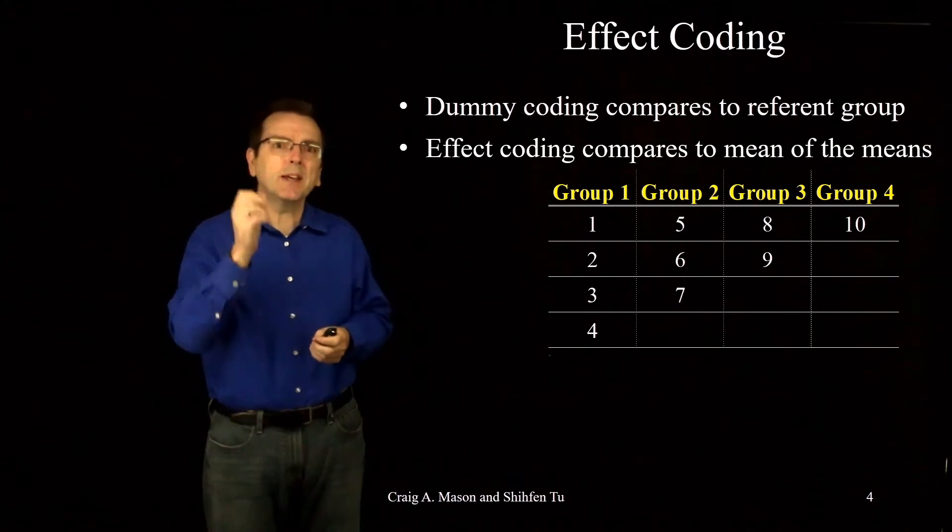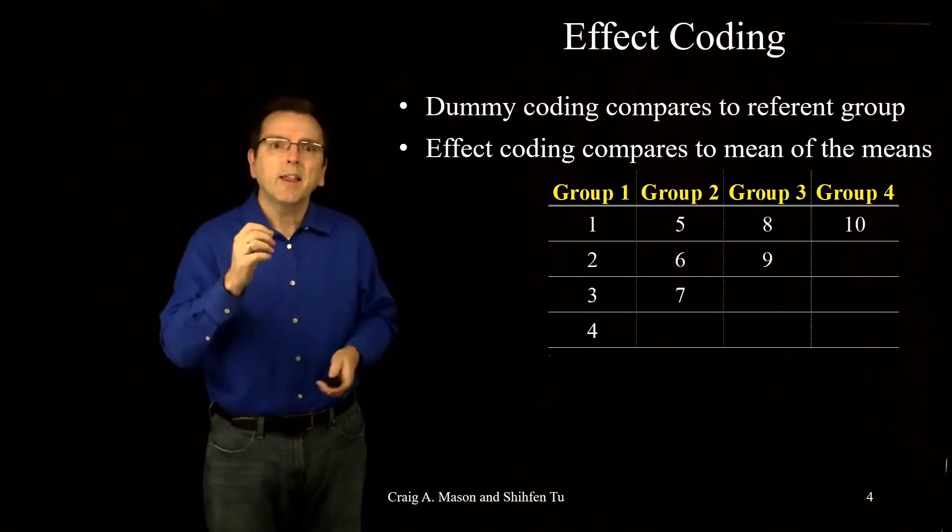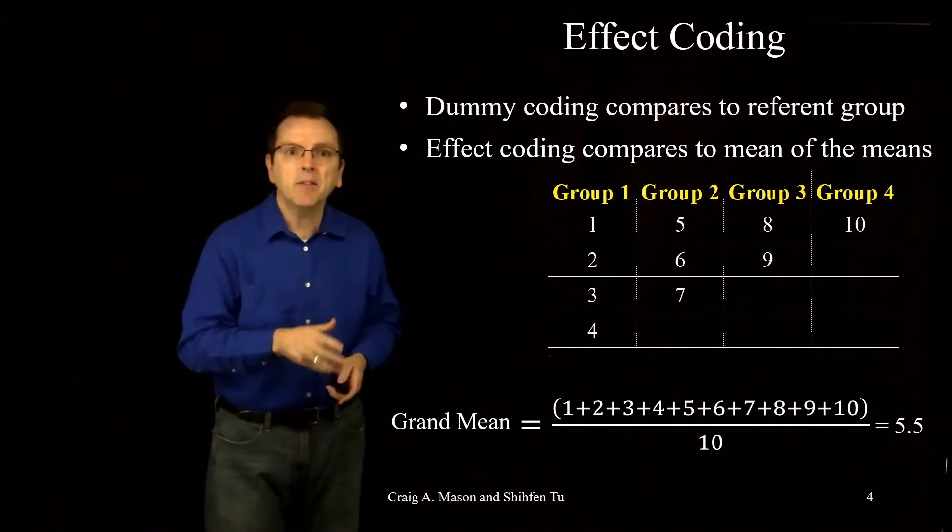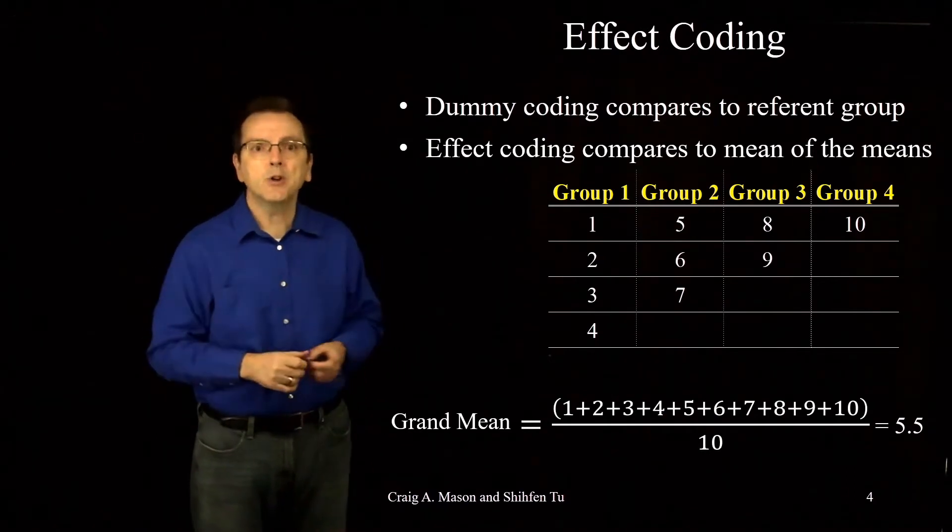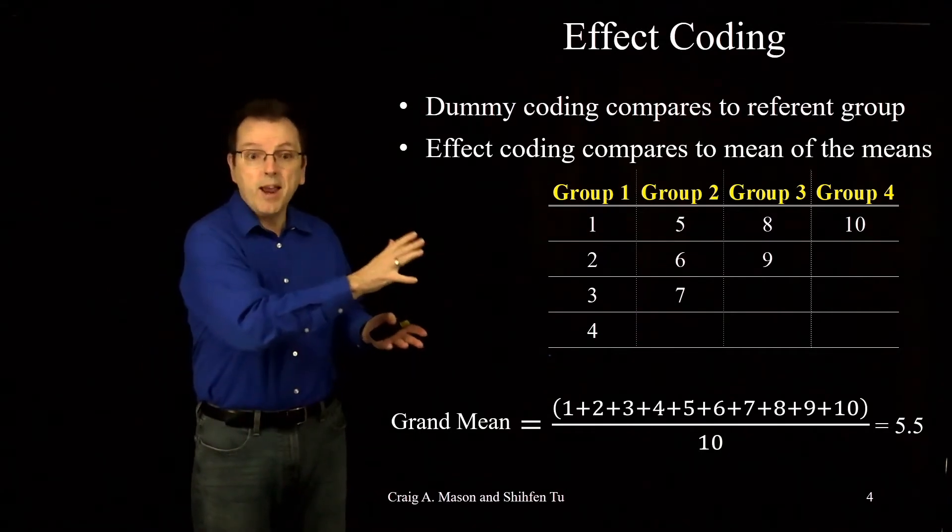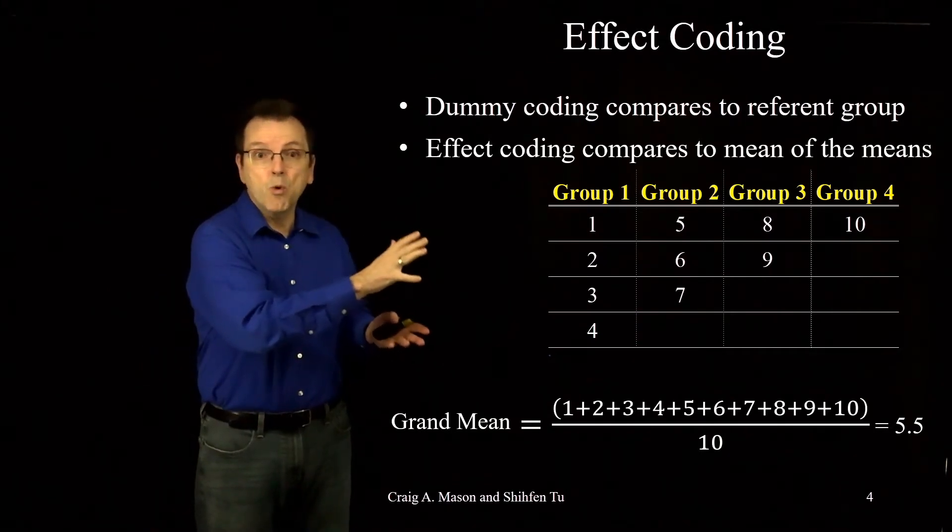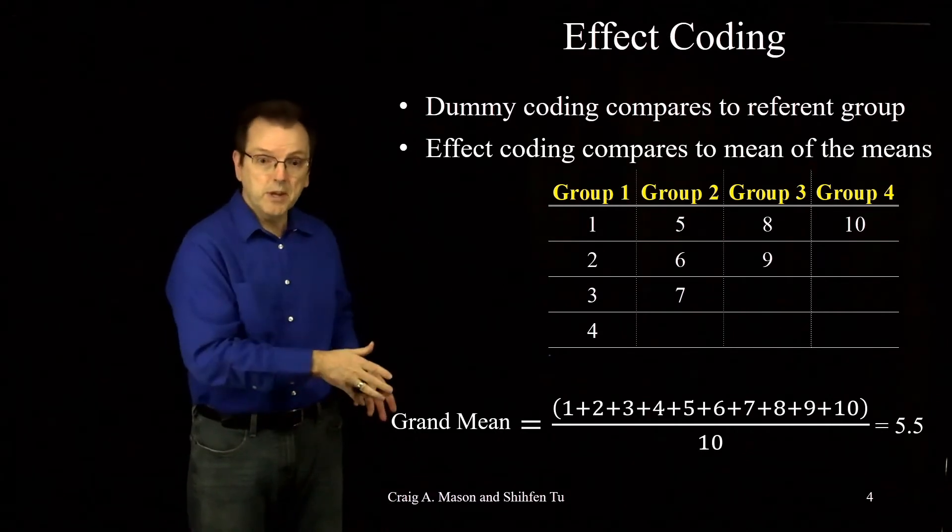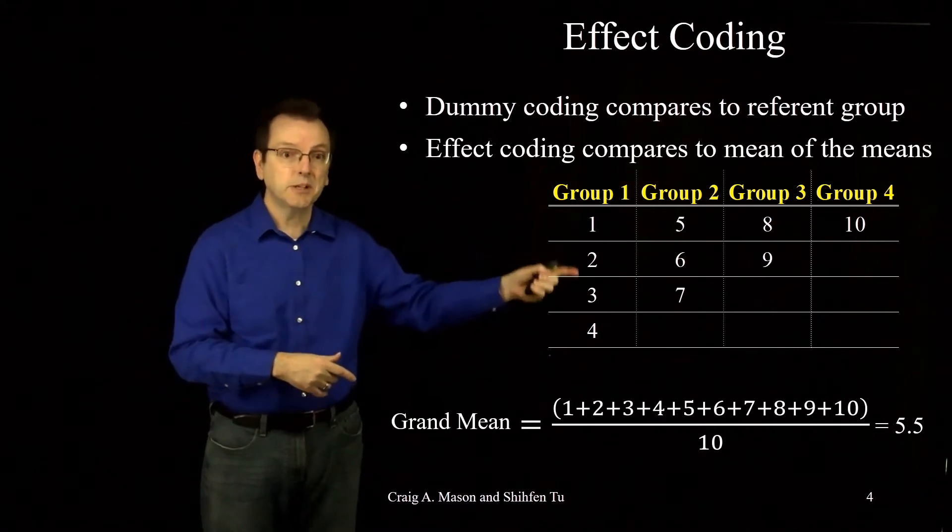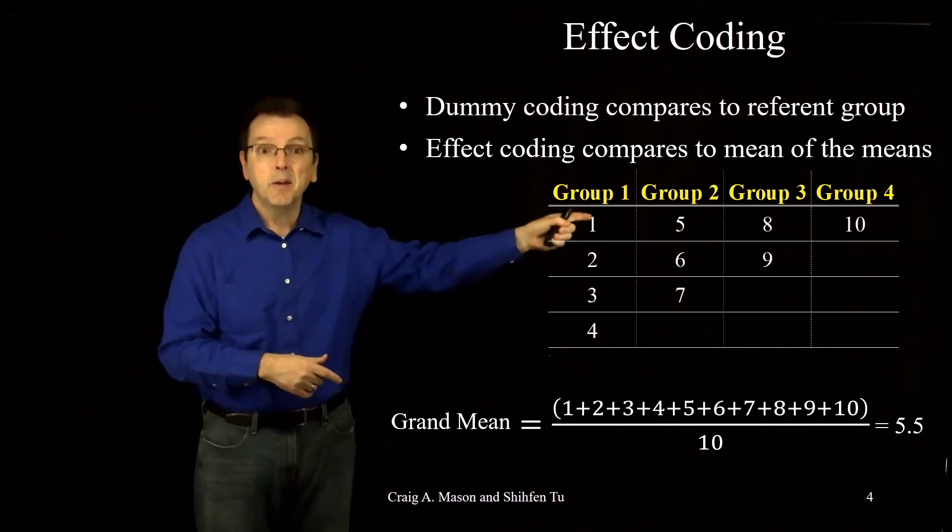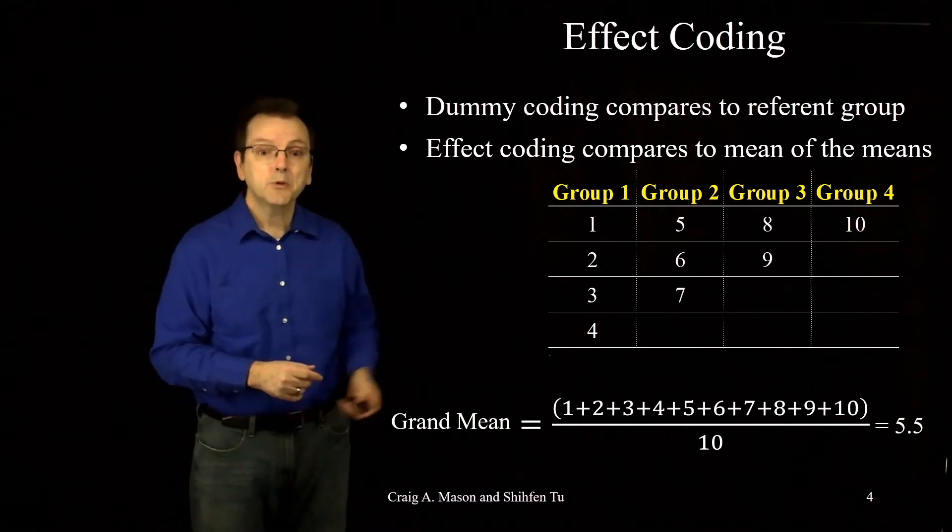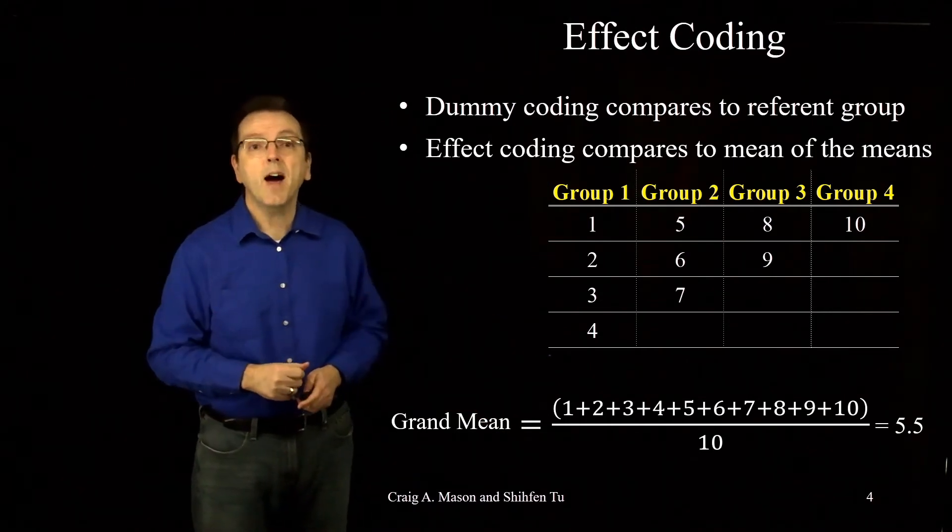And I don't want you to be confused with the grand mean, which is the sum of the individual scores divided by the total n. For example, the grand mean for these four groups would be equal to 1 plus 2 plus 3 plus 4 plus 5 plus 6 plus 7 plus 8 plus 9 plus 10 all divided by 10, which would give you a grand mean of 5.5.